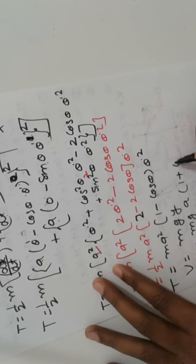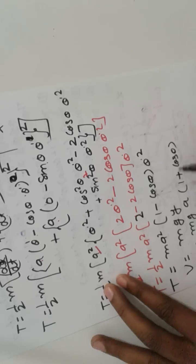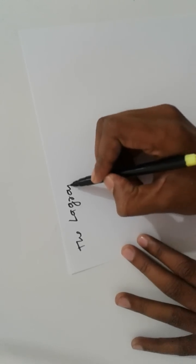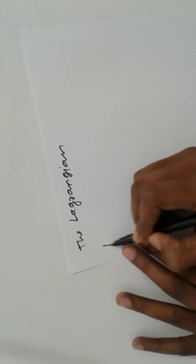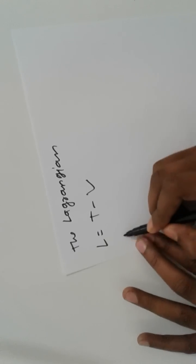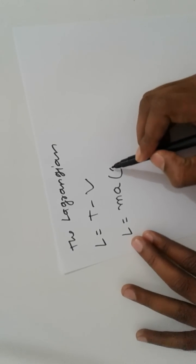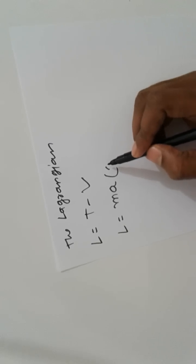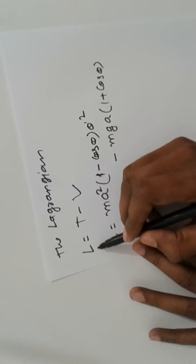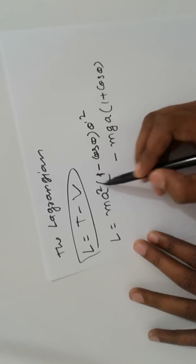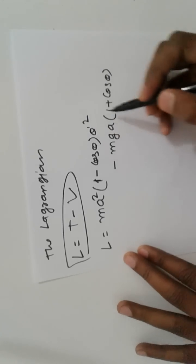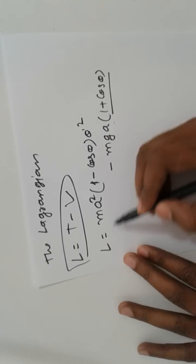Now Lagrangian L equals T minus V. So L equals T minus V. Putting the value of T: m a squared times 1 minus cos theta times theta dot squared. And V is m g a times 1 minus cos theta.